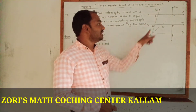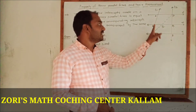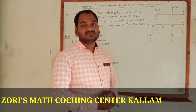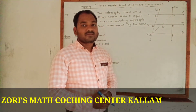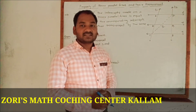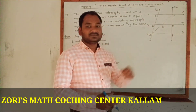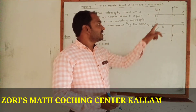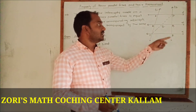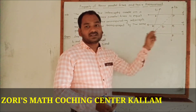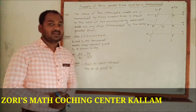T1 is the first transversal and T2 is the second transversal. We have shown that AB upon BC is equal to PQ upon QR — this ratio equality is the property.